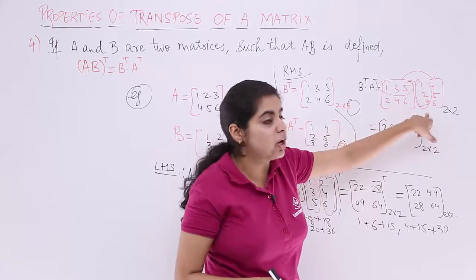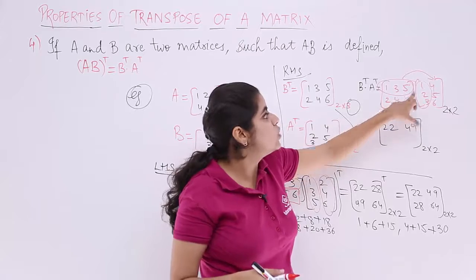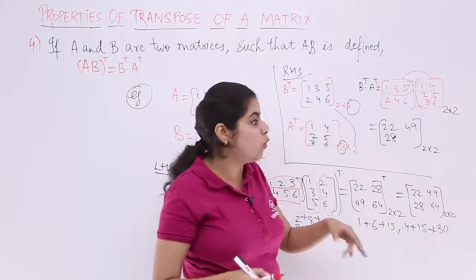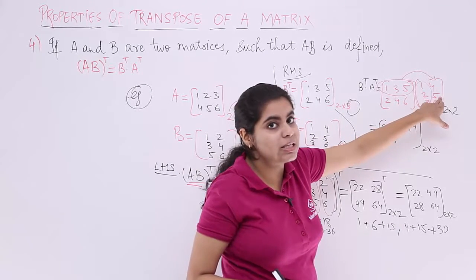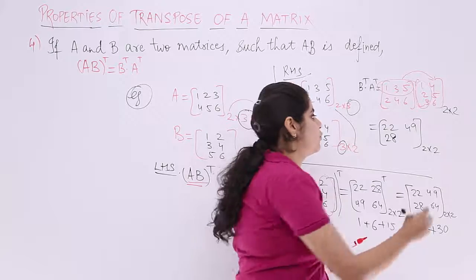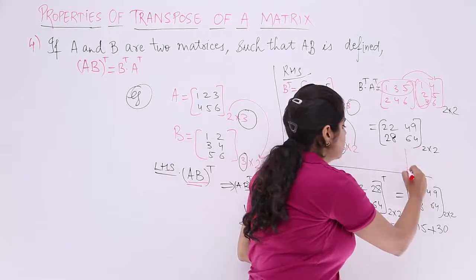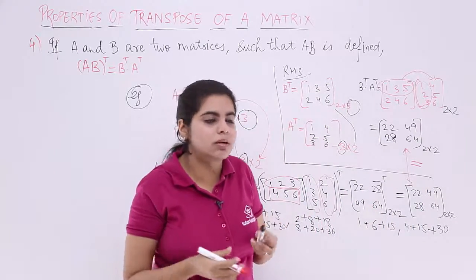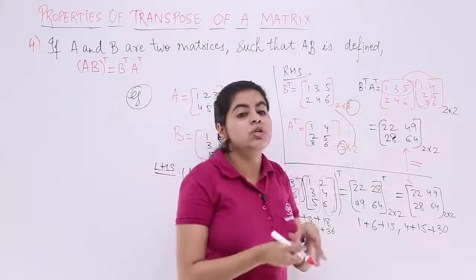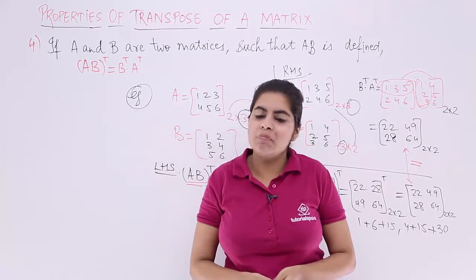Now compare the results. The matrix for AB whole transpose and the matrix for B transpose times A transpose are equal — both give [22, 49; 28, 64]. So we have verified by numerical illustration that AB whole transpose equals B transpose times A transpose.